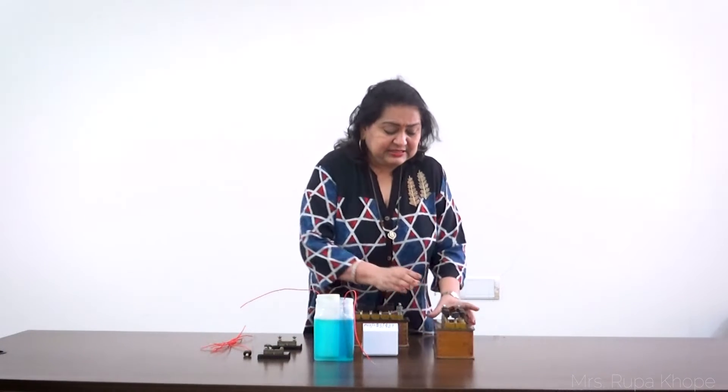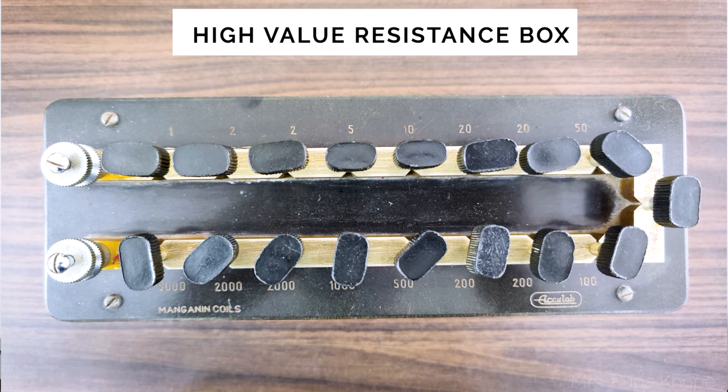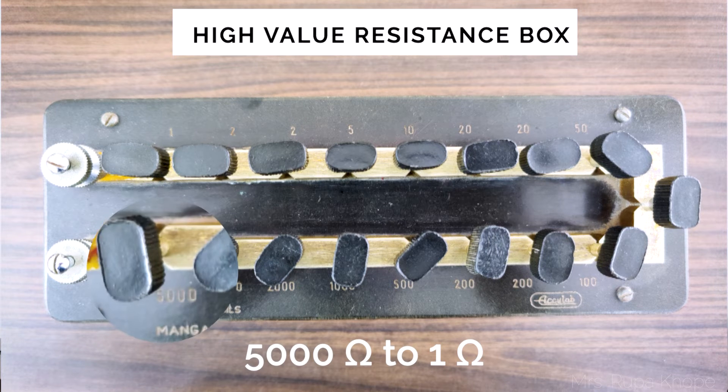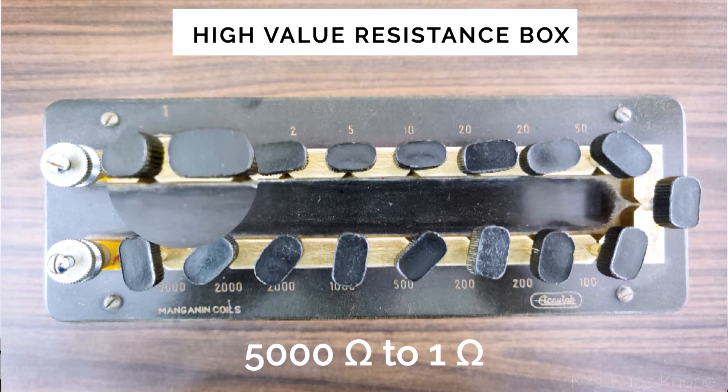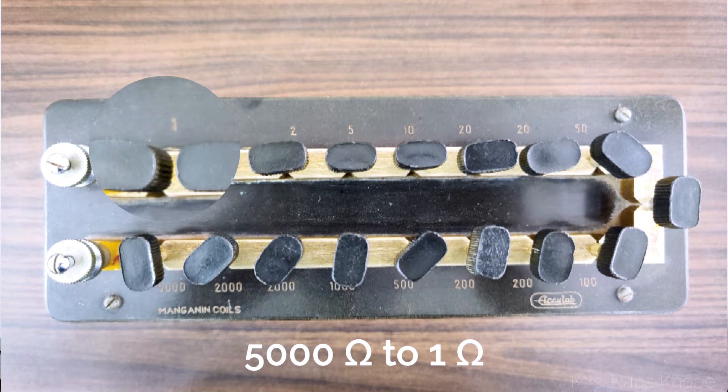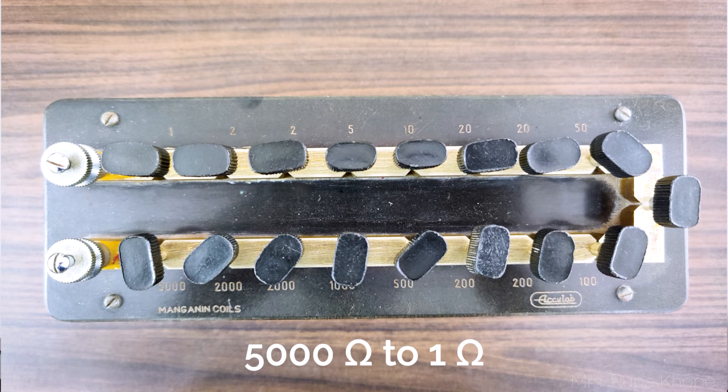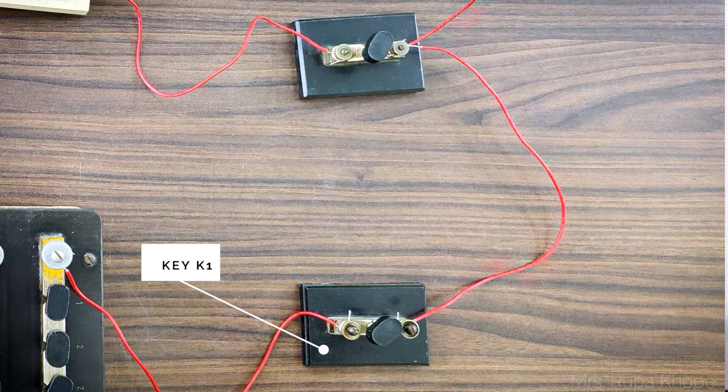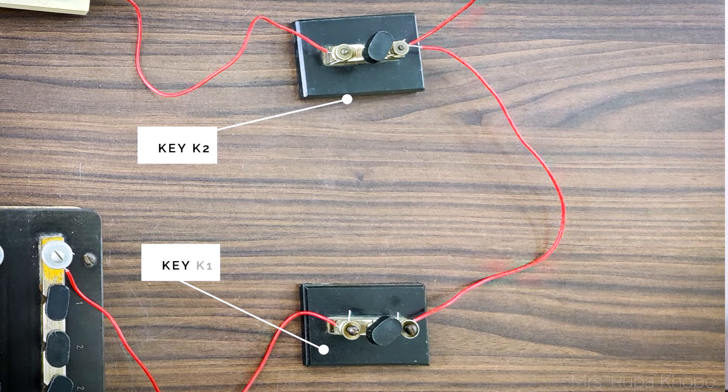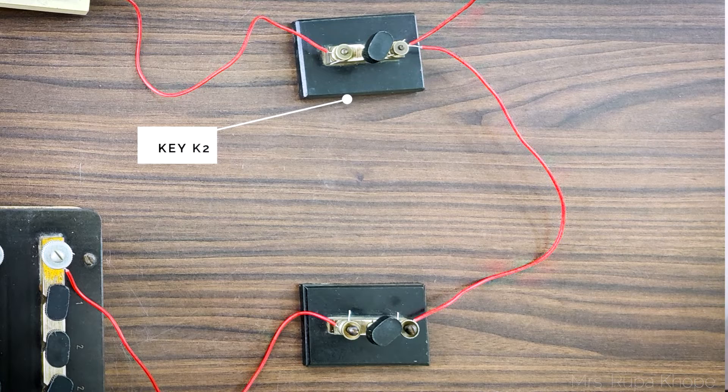Then resistance box. If you see this resistance box, it's a high value resistance box. All the values inside the resistance box of 5000, 2000, 5000 to 1 ohm. And in combination, you can make it 10,000 also. So this is the high value. This is the low value resistance box. The values from 0 to 500 ohms. This is the key K1 and this is the key K2. So this is all about the apparatus.